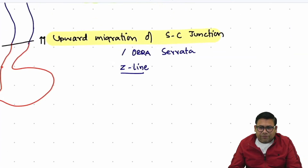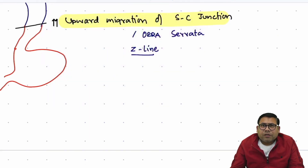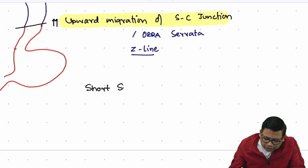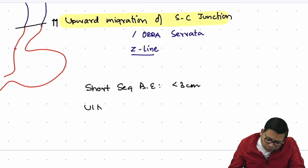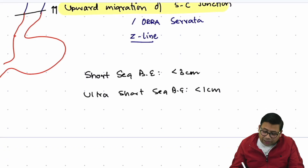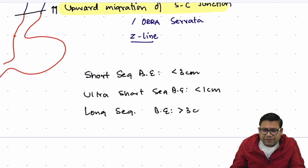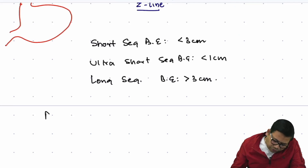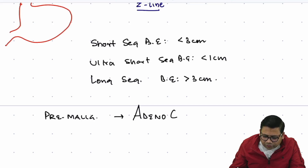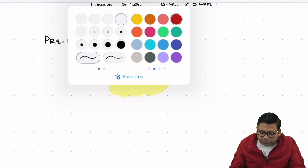Now let's understand the basic layout of Barrett's and the associated terminologies. Short segment Barrett's esophagus is defined as less than three centimeters. Ultra-short segment Barrett's esophagus is less than one centimeter. Long segment Barrett's esophagus is defined as more than three centimeters. Barrett's is a pre-malignant lesion, so it carries a very high risk of adenocarcinoma.